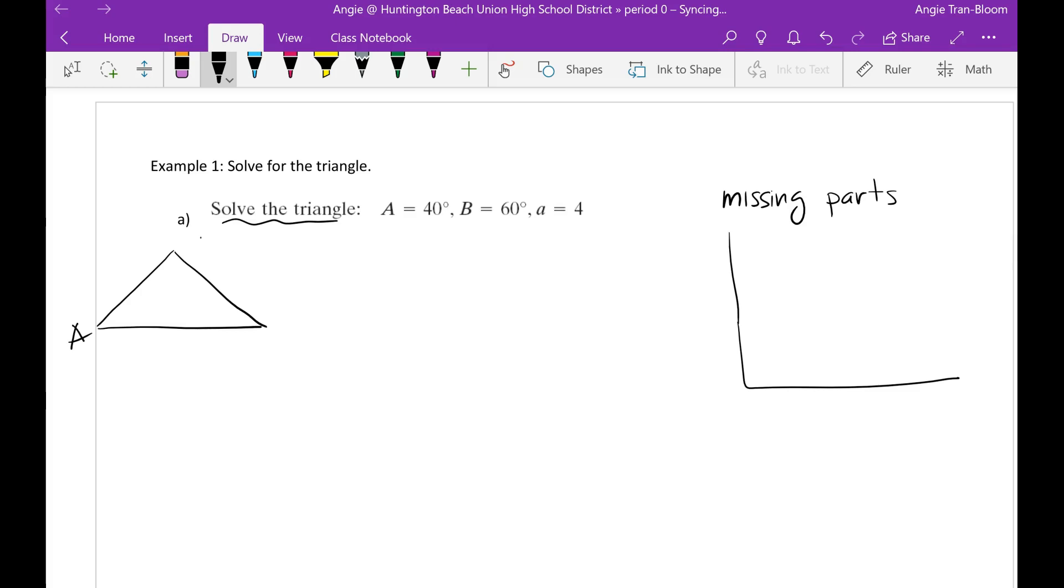So draw it out. You can label it however you want. It's not important as long as you know if this is A, this is 40 degrees. That means this little a is 4 units long. If you put B up here, then this is 60 degrees. Then this is leg B. And C is unknown, so this is leg C. But 180 degrees it's in a triangle. You already know two of the three.